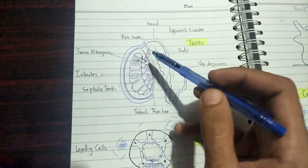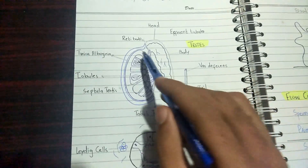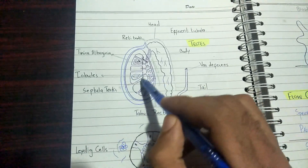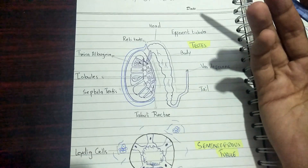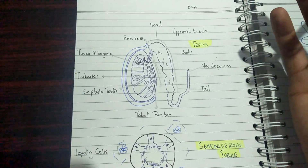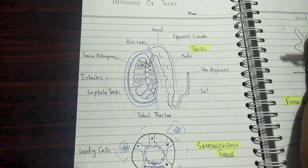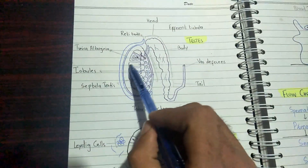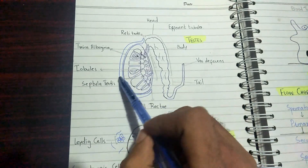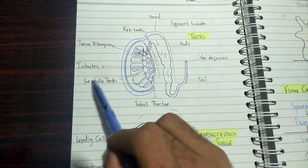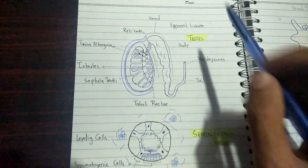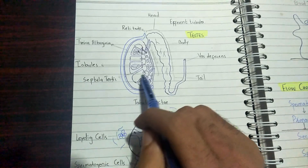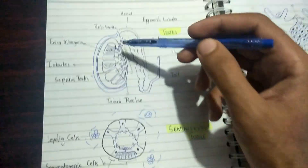Inside the testes, we have testicular lobules. These lobules are differentiated and separated from each other by a septum — a demarcating structure between two things. The septa between these lobules are known as septula testi, derived from the word septum.